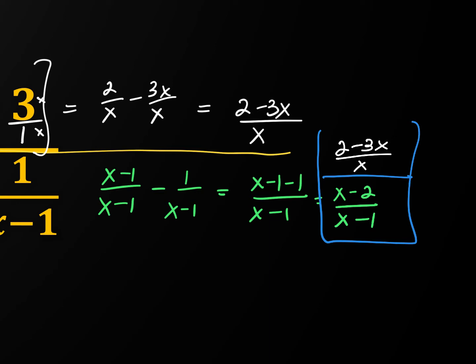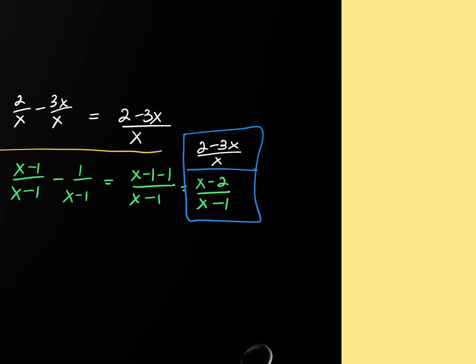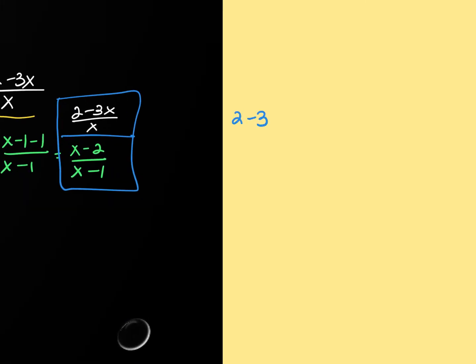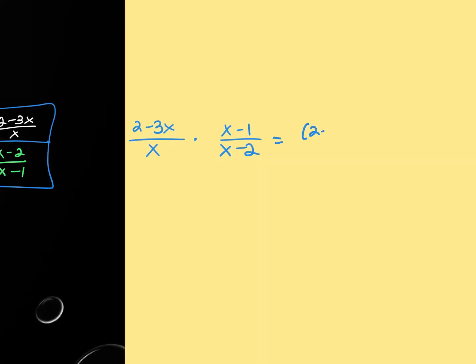So the full fraction is now (2-3x)/x divided by (x-2)/(x-1). Keep-change-flip: multiply (2-3x)/x times (x-1)/(x-2). Nothing cancels, so multiply straight across: (2-3x)(x-1) over x(x-2). You can leave it just like that — you don't have to FOIL it all the way out.